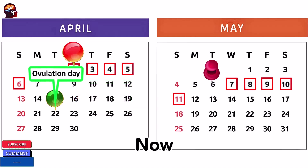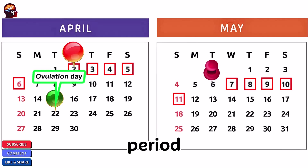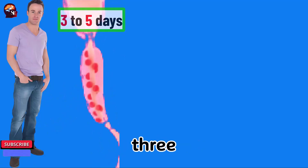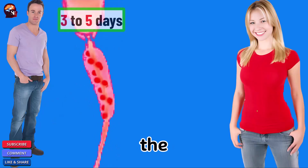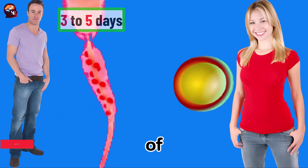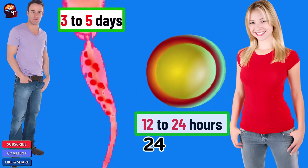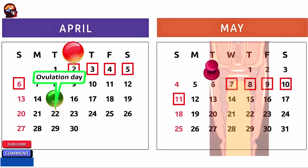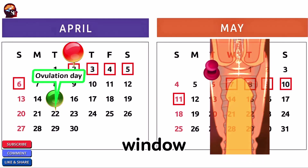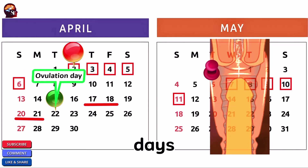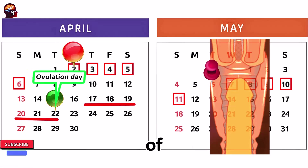Now it's easy to recognize the fertile period. It is determined by the lifespan of spermatozoa — 3 to 5 days in the female genital tract — and that of the egg, 12 to 24 hours after ovulation. The fertile window lasts 6 days per cycle: the 5 days preceding ovulation and the day of ovulation itself.